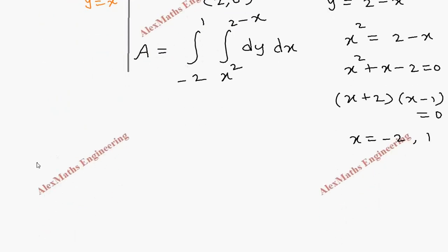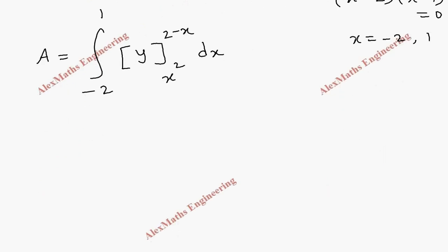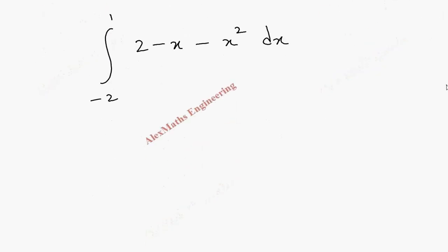Now let's continue the double integration. So area = ∫₋₂¹ ∫_{x²}^{2-x} dy dx. Integration of dy is y, and I have to substitute the limit from x² to 2 - x. Next we have dx. Now we substitute the upper limit, which is 2 - x, and lower limit minus x². This we integrate from -2 to 1 with respect to x. So the integration is [2x - x²/2 - x³/3] from -2 to 1.